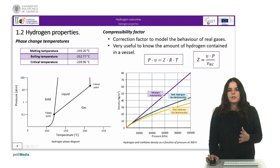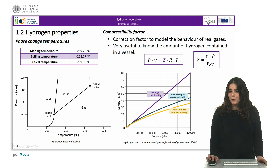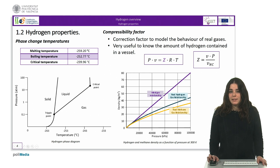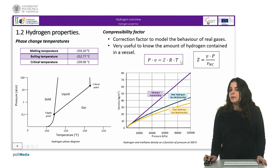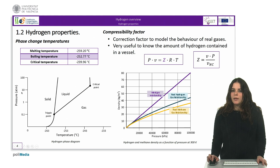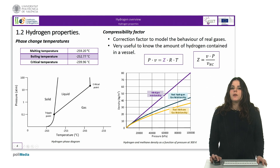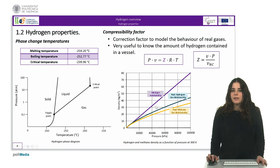Hydrogen is not an ideal gas and does not follow the ideal gas law. Therefore, it is necessary to apply a correction factor into the equation of ideal gases to model its behavior, as we can see in this first equation. This correction factor is called the compressibility factor, and it can be understood as shown in this second equation, where u is the occupied volume of the gas, p is the pressure applied, and u_c is the specific volume of the gas in normal conditions. The deviation of a gas from its ideal behavior becomes greater as the pressure is increased, as we can appreciate in this figure.